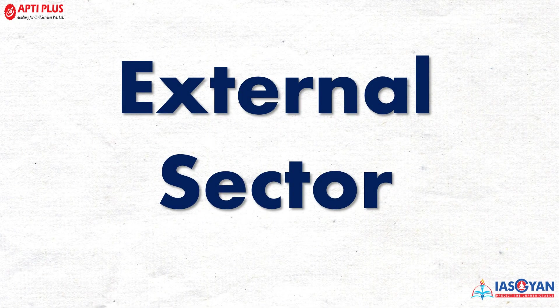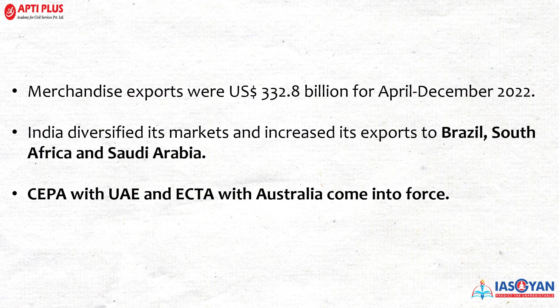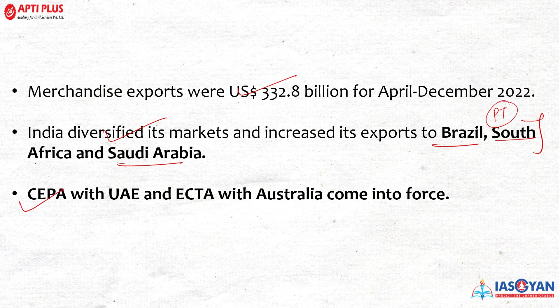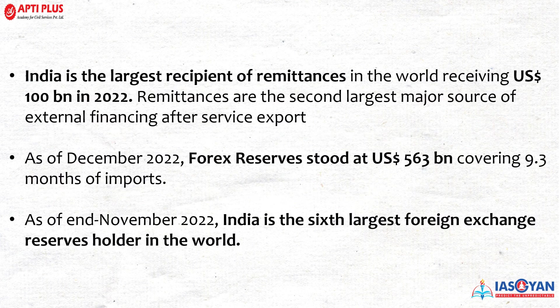Chapter 11: External Sector. Merchandise exports stood at $332.8 billion from April to December 2022. India diversified its export markets, increasing exports to countries like Brazil, South Africa, and Saudi Arabia. India has extended the Comprehensive Economic Partnership Agreement (CEPA) with the UAE, and the Economic Cooperation and Trade Agreement (ECTA) with Australia has come into force. India is the largest recipient of remittances in the world at $100 billion in 2022.